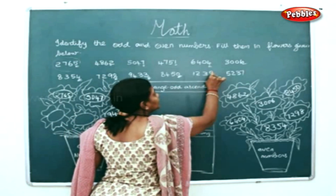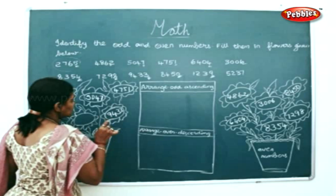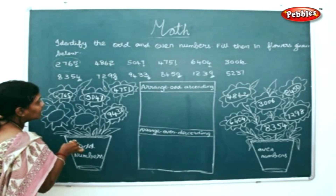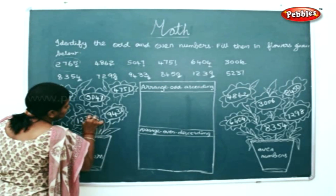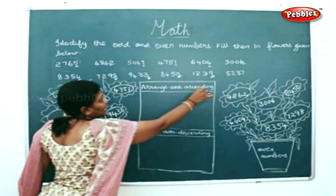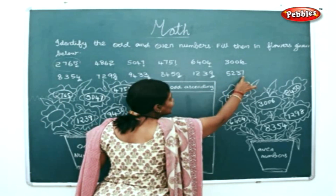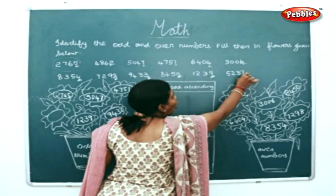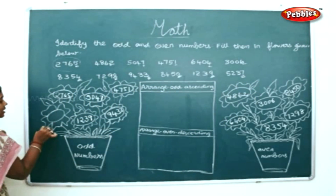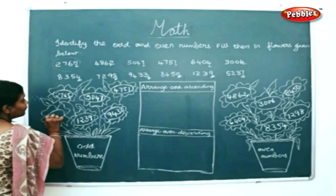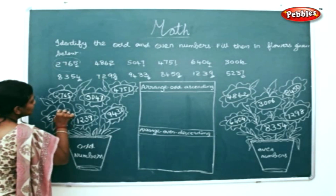Next, 1239 — 9 is an odd number, so I'll write it in the odd numbers place: 1239. The last one is 5237 — 7 is an odd number, so I'll write it in the odd numbers place: 5237.